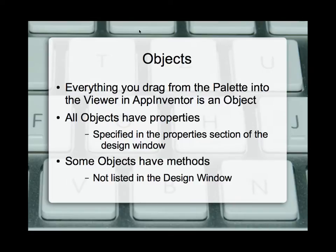Every object has properties. Some of those properties can be very small — for example, a vertical arrangement only has properties for how big it is: width and height, and possibly alignment. But a button or a text box can have lots of properties, such as width, size, contents, whether or not there's bold, italic, etc. The amount of properties changes based on what object we're dealing with.